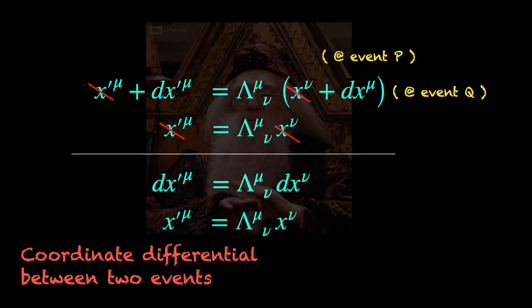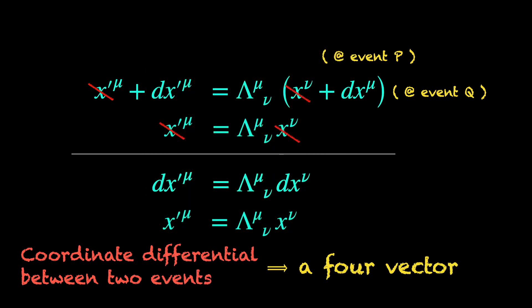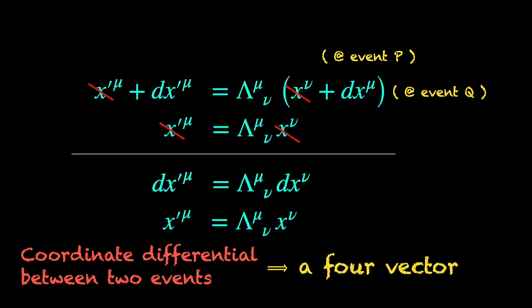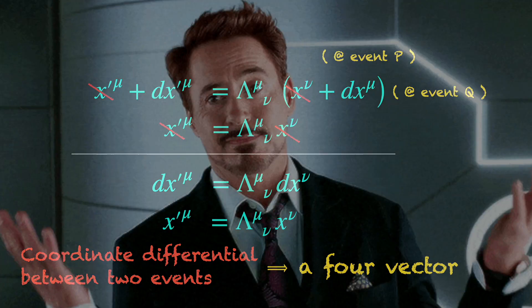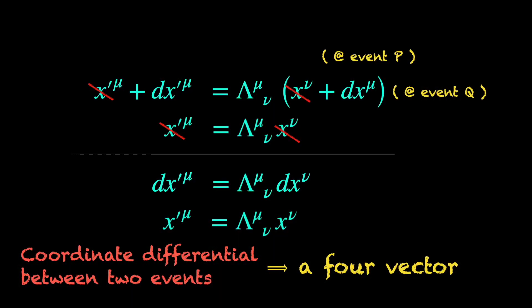So, we got ourselves a 4 vector. This looks almost trivial, right? It certainly does if you are familiar with calculus. You will immediately say we have just taken a differential of the Lorentz transformation equation. Quite true, but sometimes it is good to remind ourselves what taking differentials physically mean.